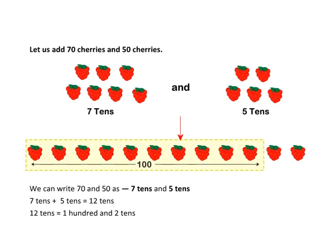12 tens is equal to 100 and 2 tens. Let us add 272 and 859. Firstly, arrange 272 and 859 in columns.